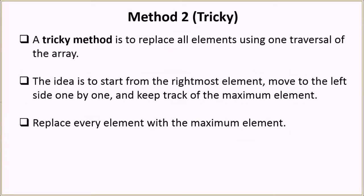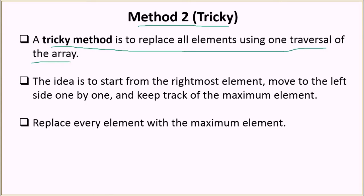Now let's look at a tricky method by which we aim to improve the time complexity. In Method 2, the tricky method, we replace all elements using only one traversal of the array. In the previous solution with O(n²) complexity, we were doing multiple iterations, but in this solution we are going to do only a single traversal of the array.